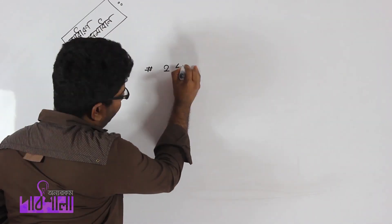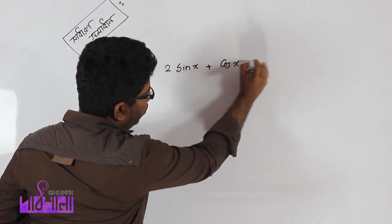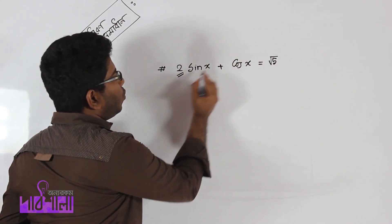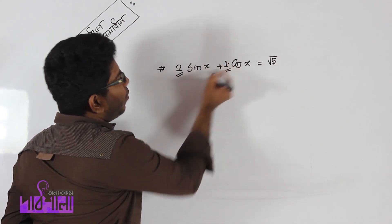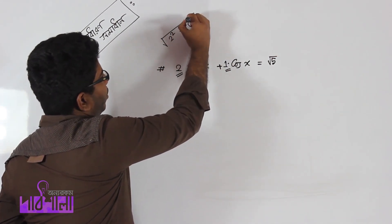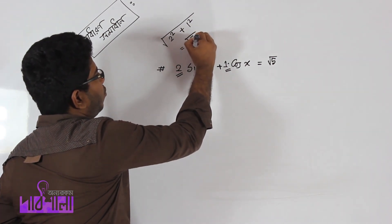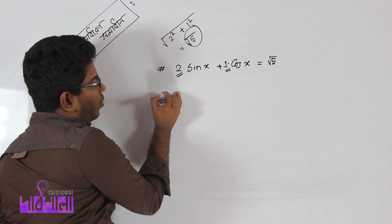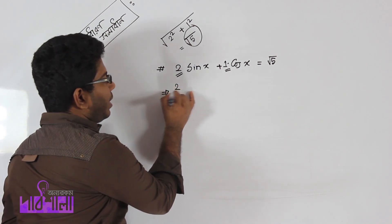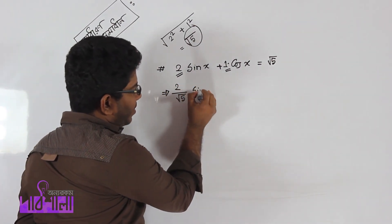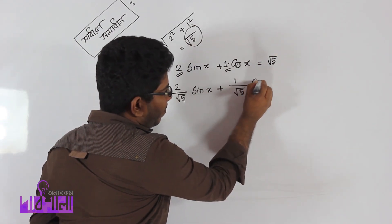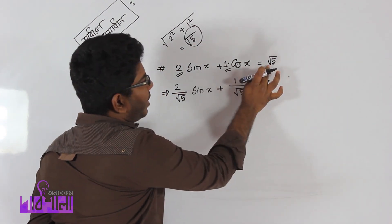We have the problem: 2 sin x plus cos x equals root 5. Here a equals 2 and b equals 1. Root over a squared plus b squared equals root over 2 squared plus 1 squared equals root 5. Dividing both sides by root 5: (2 divided by root 5) sin x plus (1 divided by root 5) cos x equals root 5 divided by root 5 equals 1.